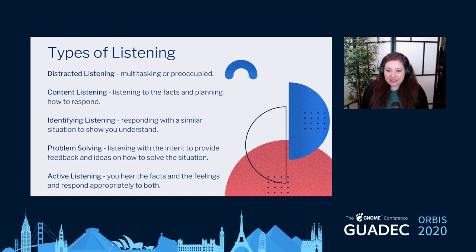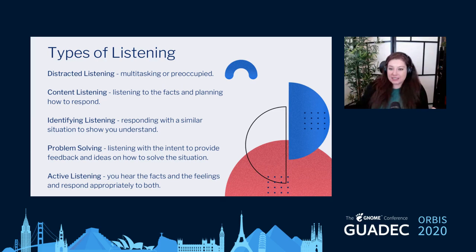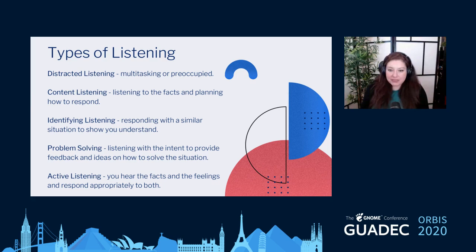Then there's identifying listening, where you respond with a similar situation of your own. For example, your friend says 'I'm so excited, I'm going to Croatia next month!' and instead of letting them share, you say 'I love Croatia, I went there last year!' — you've switched the dynamic. Instead, you might say 'Croatia! Tell me about that — I've been there too,' encourage them to speak first, and at the end offer: 'If you want any tips on what I did, I'd be happy to share them.'